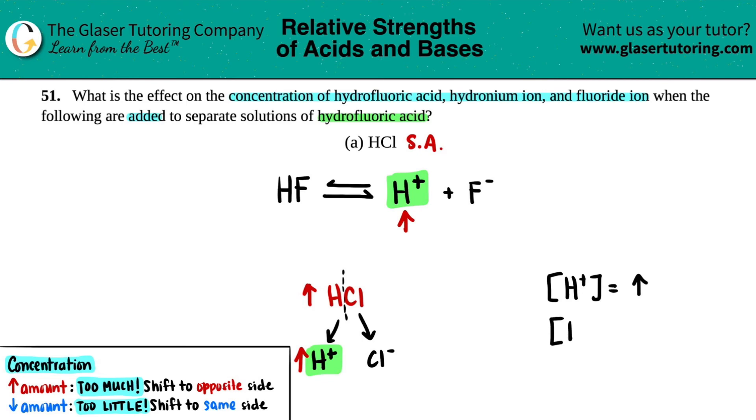Now, all we have to do is just figure out what happens to the concentration of hydrofluoric acid and the fluoride ion. This comes from what's going on with Le Chatelier's principle. Since we're adding something, we're increasing the amount, we have way too much. You're always going to shift to the opposite side. So since this is the products, the shift is going to be towards the reactants.